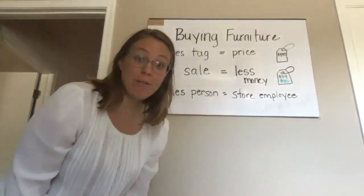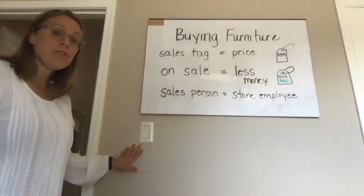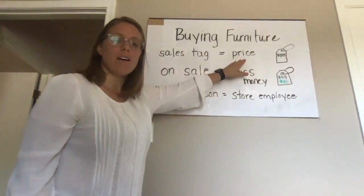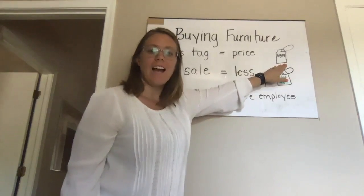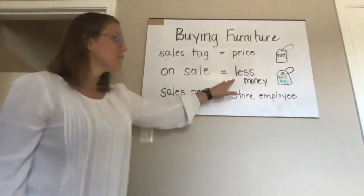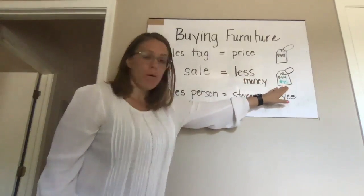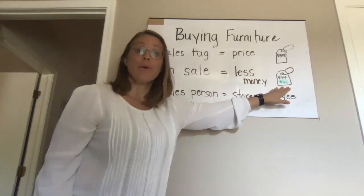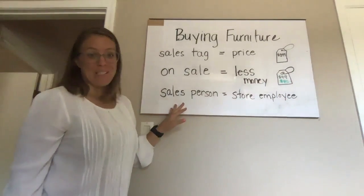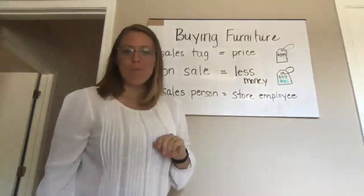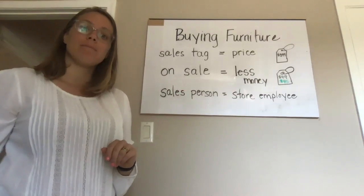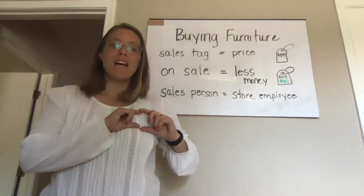Let's go over some of the vocabulary we heard about buying furniture. A sales tag tells us the price of the item. On sale means less money. The lamp was on sale for $45. That's an expensive lamp. A salesperson is the store employee. If you need help at a store, you look for the salesperson. They often have a name tag. Thank you.